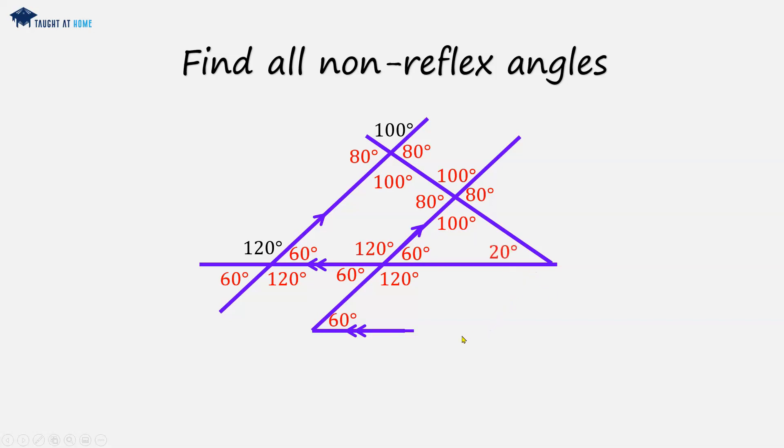And as a sanity check here, we can also see we've got a quadrilateral in the middle portion, because we've got four sides, and all angles in a quadrilateral must add up to 360. So do all angles inside this quadrilateral add up to 360?